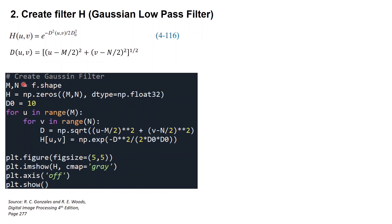Here is the Python code for the Gaussian low pass filter. First we get the size of image F using f.shape, then we create our filter H using the NumPy function np.zeros. In this example I set D0 to 10, and using a for loop we calculate D and fill the values in variable H using the Gaussian low pass filter equation. We can display our filter using plt.imshow.